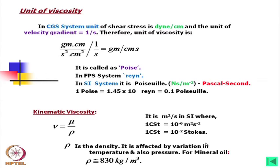Density ρ is affected by variation in temperature and also pressure. For mineral oil, ρ can be taken as approximately 830 kg/m³. It normally varies from 830 to 850 kg/m³.